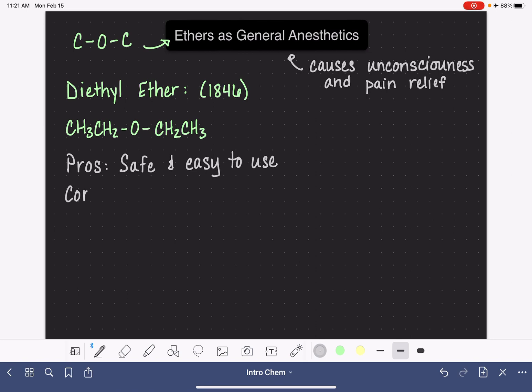There were a couple of disadvantages to using diethyl ether. Number one, probably the biggest one, is that it's very flammable. Not just the liquid itself but the gases or the fumes that come off the liquid are extremely flammable. Not exactly a great characteristic for use in an operating room.